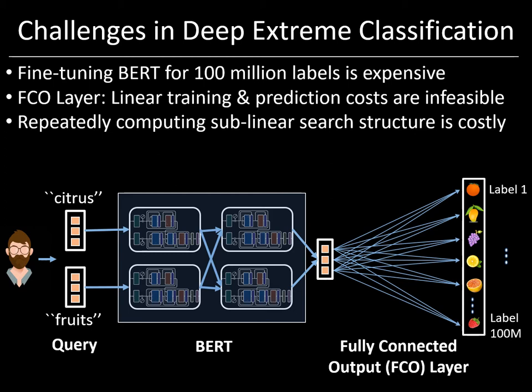One might be tempted to solve this problem by replacing the fully connected output layer — whose training and prediction costs are linear in the number of labels — by a highly scalable extreme classifier such as Parabel or Slice, because their costs are only logarithmic in the number of labels. Unfortunately, this doesn't quite work, because Parabel and Slice and other highly scalable extreme classifiers work only for pre-trained and fixed features. They cut their costs by computing an internal representation for sublinear search by learning a tree or graph data structure over this fixed feature representation. In deep learning, when the feature representation is changing with every mini batch, recomputing this sublinear search data structure can be even more expensive and less accurate.